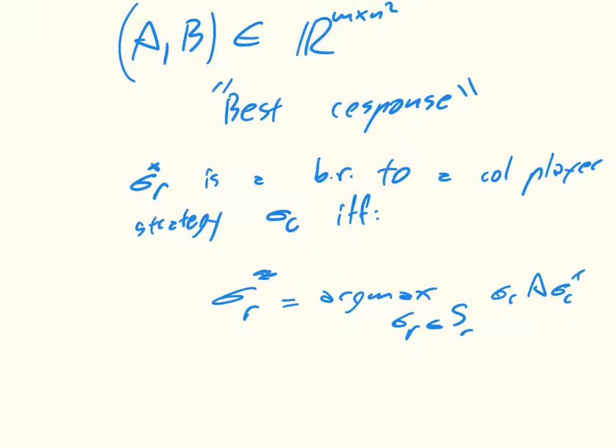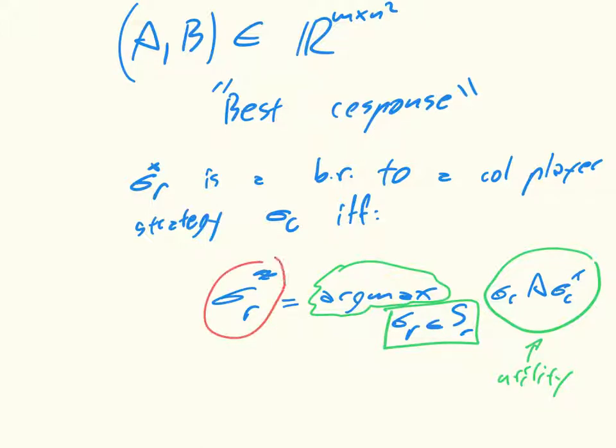So let's just take this apart. This is just the utility of the role player. This is just checking all of the role player's strategies, and argmax simply means that sigma r star, the best response, is the one that makes this as big as possible.